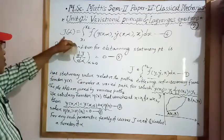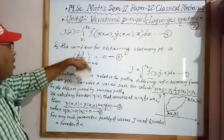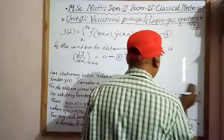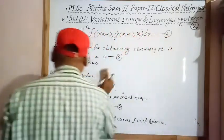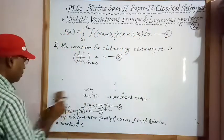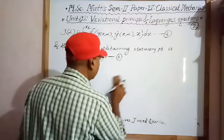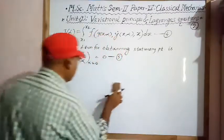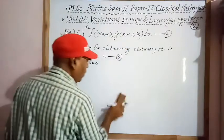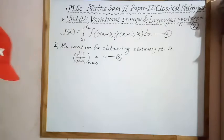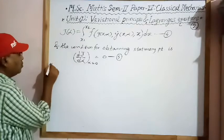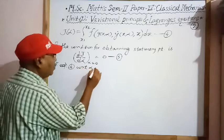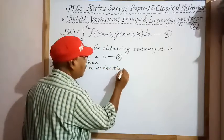Now, dJ/dα means the derivative of J with respect to α. Therefore we differentiate equation 4 with respect to α under the integration sign, according to the Leibniz rule of differentiation under the integral sign.